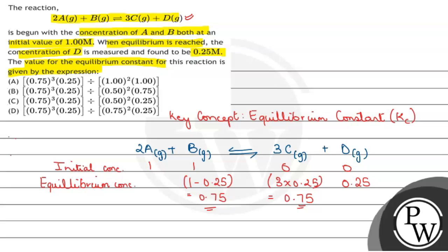A के लिए, B का 1 mol react कर रहा है and A के 2 mols react कर रहे हैं. That means 1 में से 2 into 0.25 minus होगा, जो के reactant से product में convert हो रहा है. So 2 into 0.25 equals to 0.5, 1 minus 0.5 equals to 0.5. तो A का equilibrium concentration 0.5 है — ऐसे हमने find out किया.